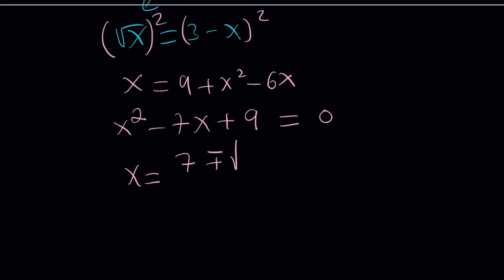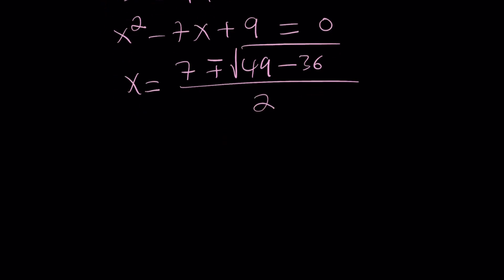x can be written as negative b plus minus, remember the quadratic formula, the square root of b² which is 49 minus 4ac which is 36. And this is going to give us the square root of a prime number, which is good. So x can be written as 7 plus minus the square root of 13 divided by 2.